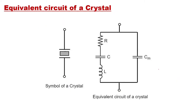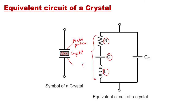Now let us see the equivalent circuit of a crystal. The crystal is placed between two metal plates just like a capacitor. The equivalent circuit of the crystal shows a resistance R, capacitance C, and inductance L in series. There is also a capacitor Cm which is in parallel to this series combination.